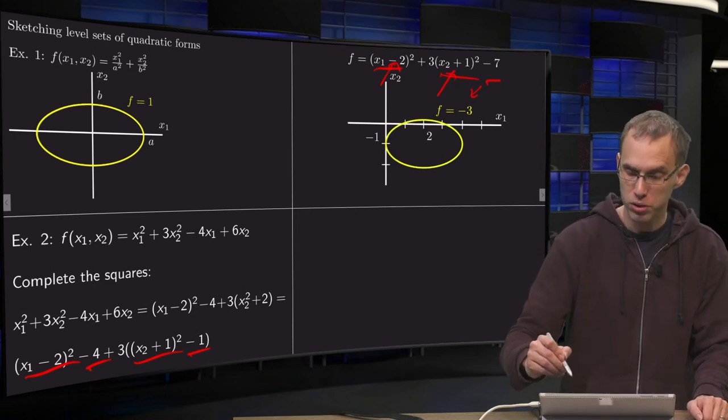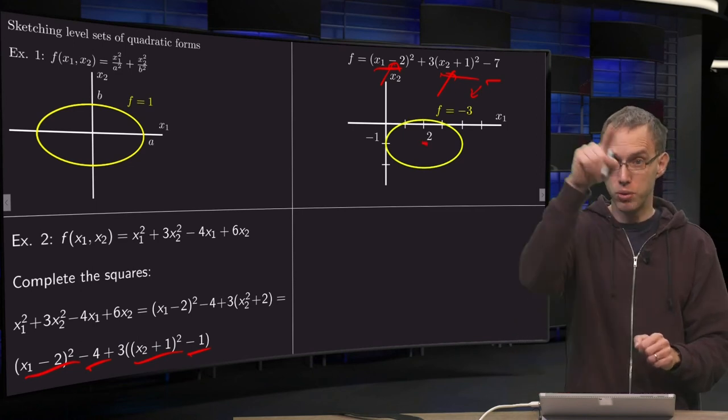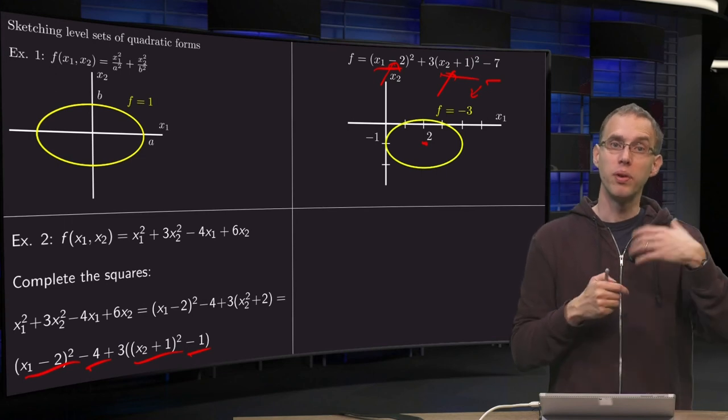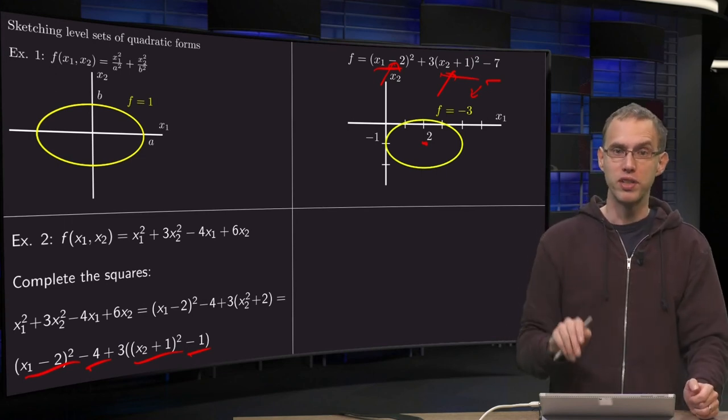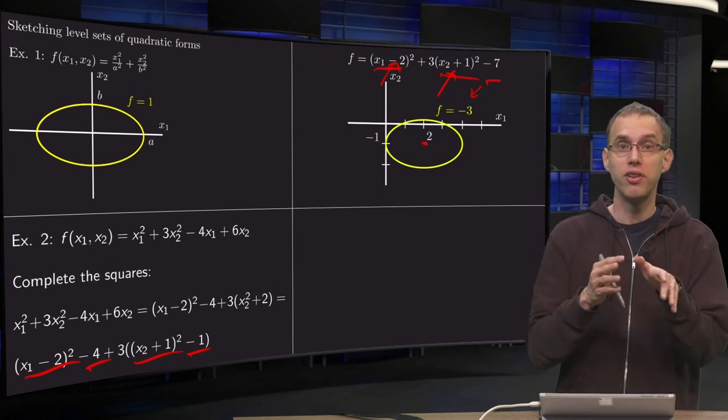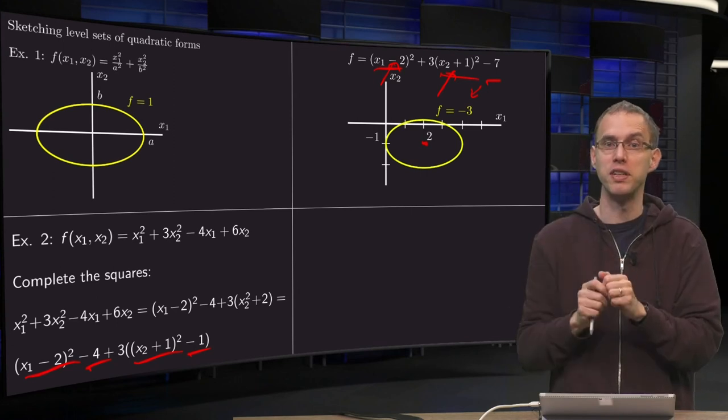So here we have our point (2, -1), and we have our ellipse around it. So what happens if you have linear terms, you can always get rid of them if you complete the square. The only thing that happens is that the center of, in this case, your ellipse just shifts a bit, so that's all.